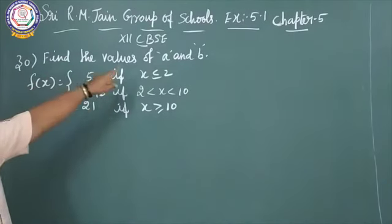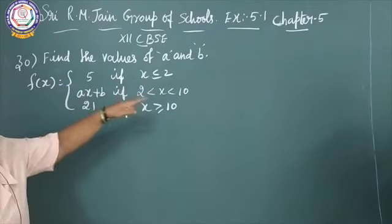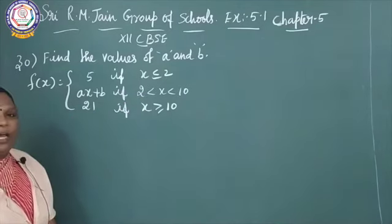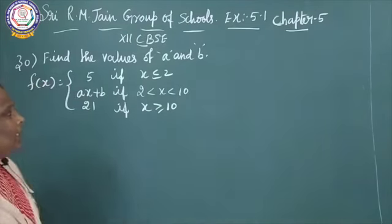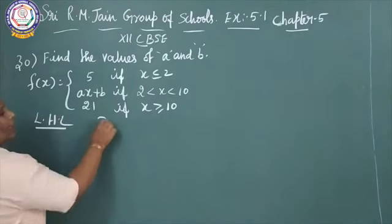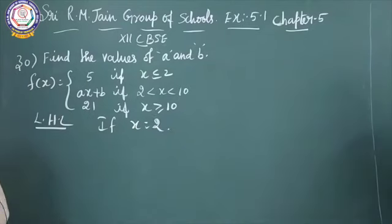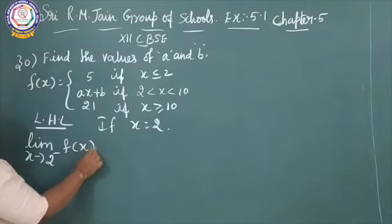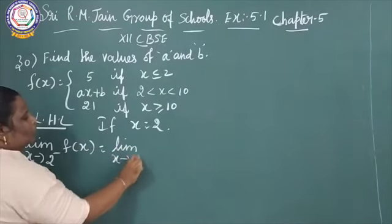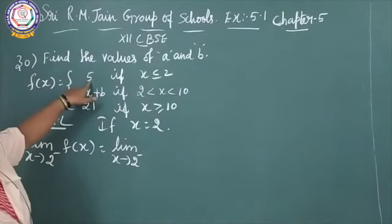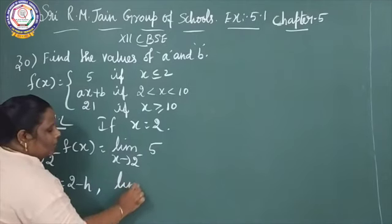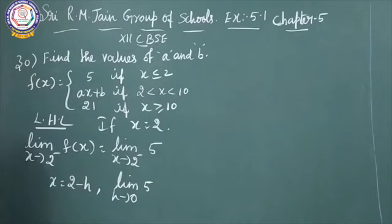The 30th sum: find the values of a and b. f of x equals 5 if x less than or equal to 2, ax plus b if 2 less than x less than 10, and 21 if x greater than or equal to 10. We discuss continuity at x equal to 2 and x equal to 10. At x equal to 2, the left hand limit: limit x tends to 2 minus of f of x. Since x is less than 2, the value is 5. So the left hand limit is 5.